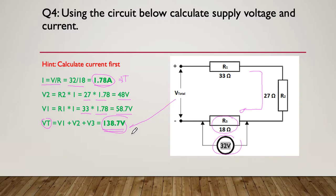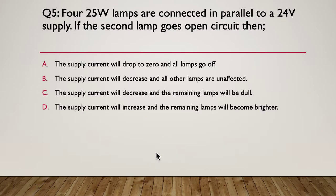Question five: four 20-watt lamps are connected in parallel to a 24-volt supply. If the second lamp goes open in the circuit, then what will happen? A, the supply current will drop to zero; B, the supply current will decrease and all other lamps will be unaffected; C, the supply current will decrease and the remaining lamps will be dull; or D, the supply current will increase and the remaining lamps will become brighter. Pause here and have a think.